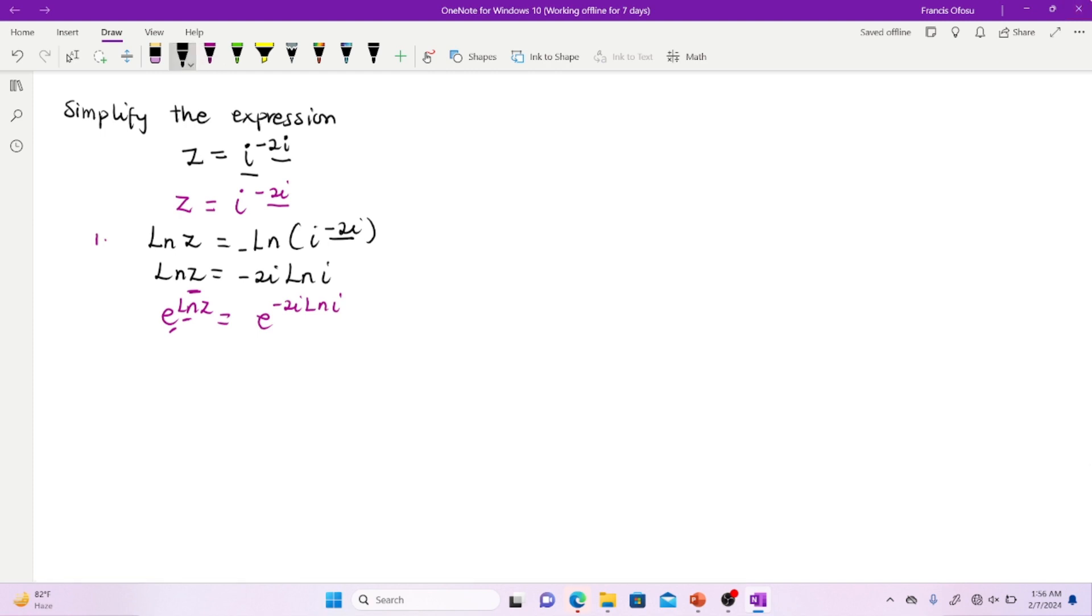So at this point, you are going to get z to be equal to e exponent negative 2i ln i. Now I've been able to make z the subject, but I still need to simplify the expression here by simplifying the ln i here.